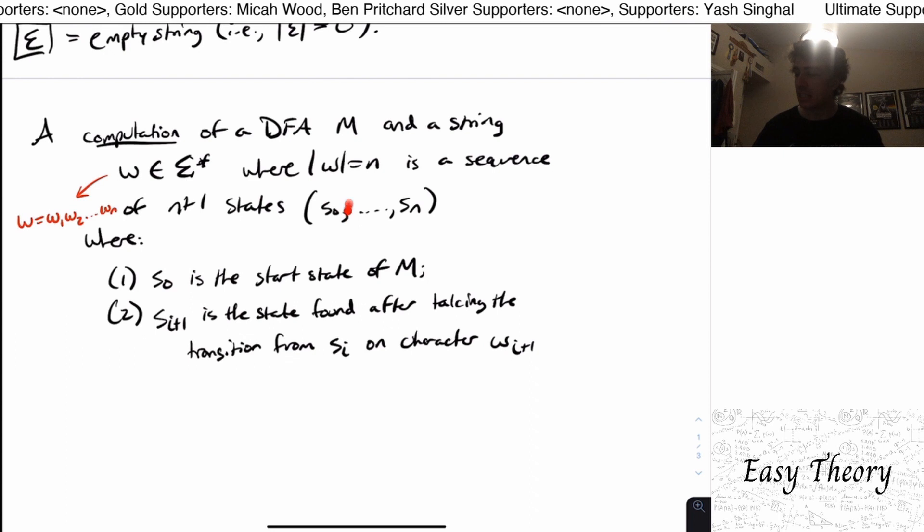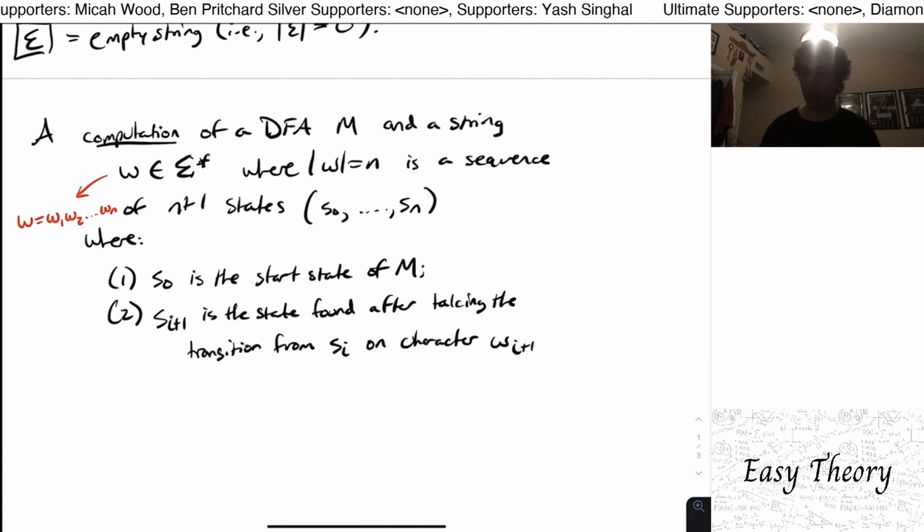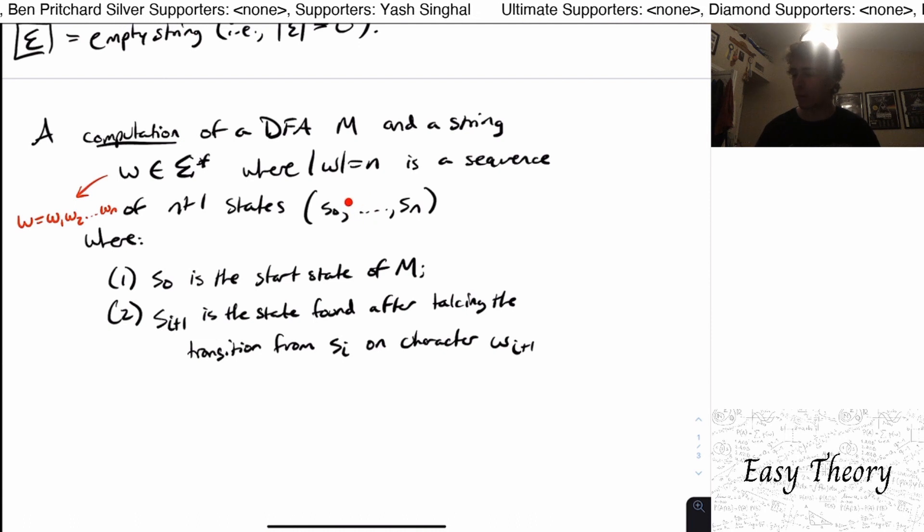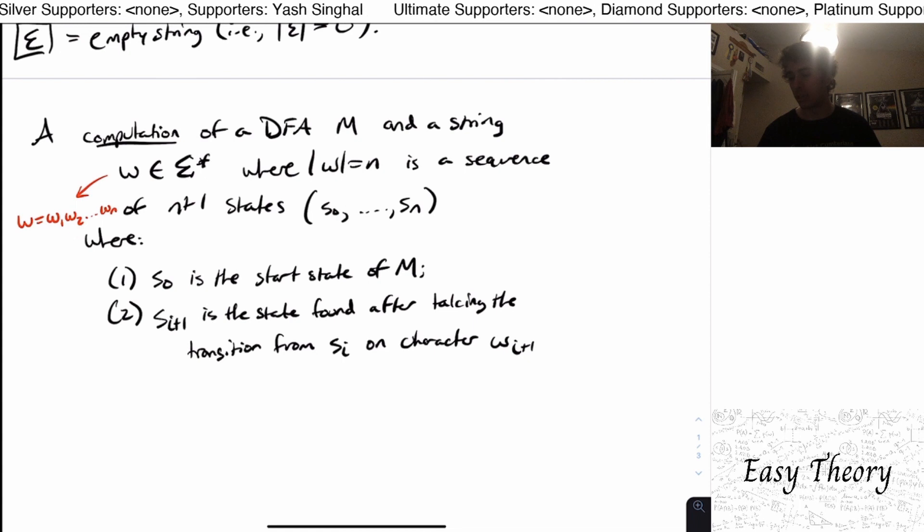But to get to s sub one, I need to go from s0 on input character w1, which is the first character in the string. And then to get to s2, I got to go from wherever s1 was, and look at the character w2 and carry through that all the way to the very end.